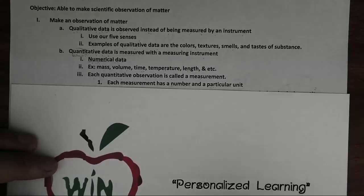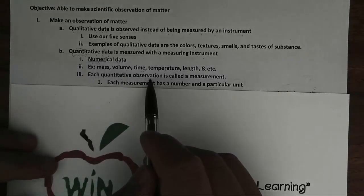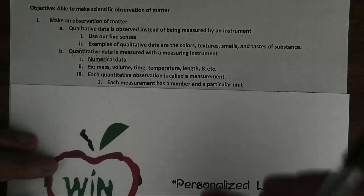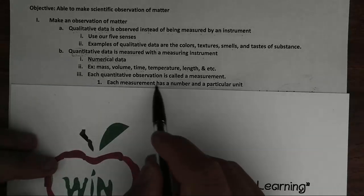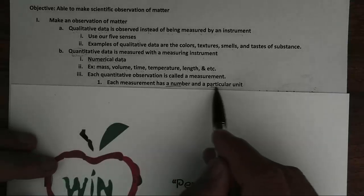Now, let's pay attention to this part. Each quantitative observation or data is called a measurement. So the word measurement describes a quantitative data. And each measurement has two parts: a number and a particular unit.